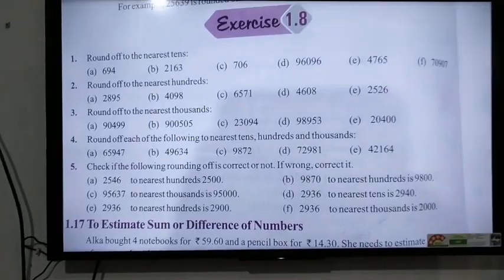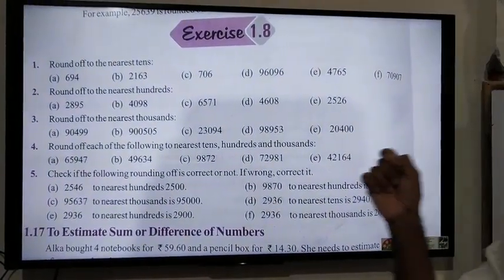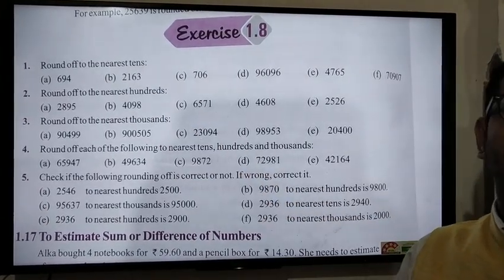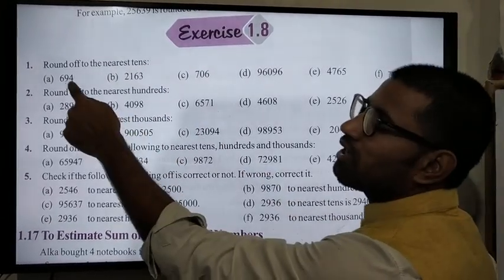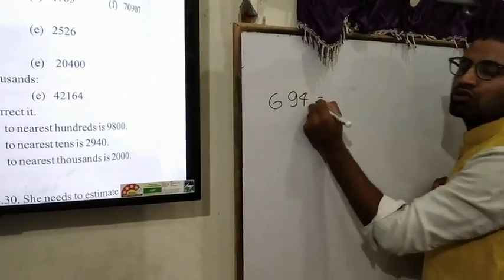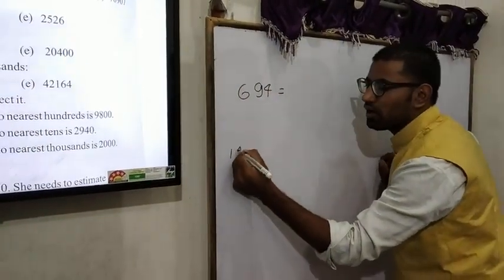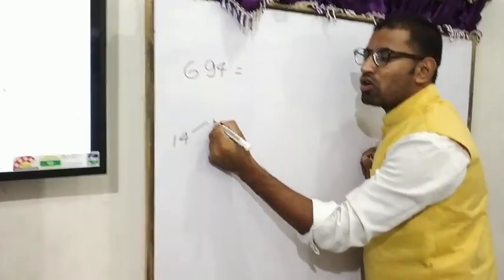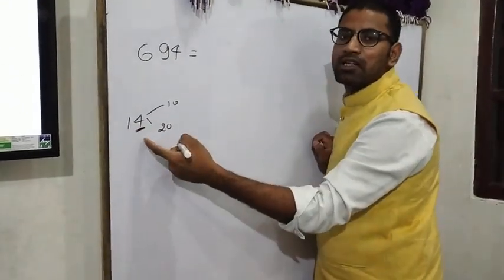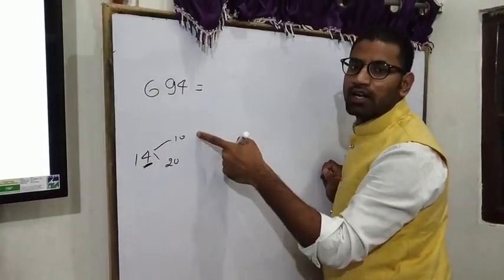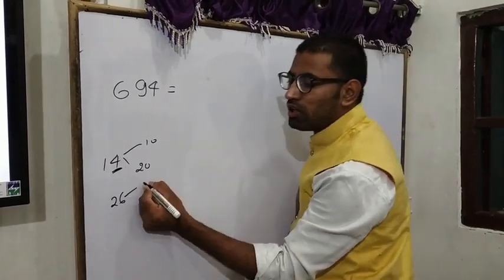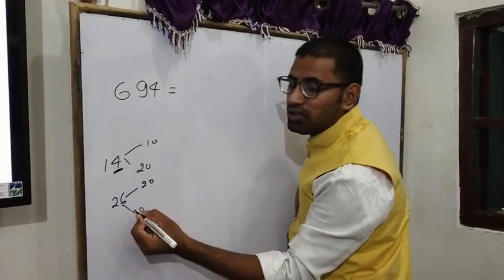First question, round off 694. To round off, 14 comes between 10 and 20, and here comes 5. So when 5 comes, for example, 14 comes to 10. Another example: 26 comes between 20 and 30, here comes 5.